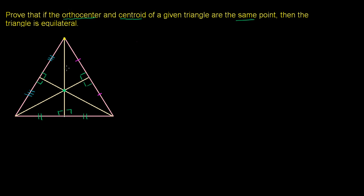With that established, we've marked up everything we can assume given that this is both an orthocenter and a centroid. Now let's prove this has to be an equilateral triangle. Let me label some letters so we can refer to things more easily. Let's call the vertices A, B, C, and the midpoints D, E, F, with the centroid labeled G.